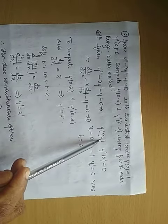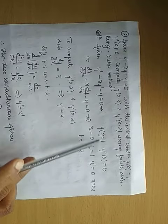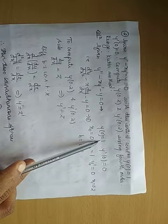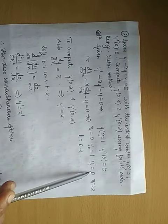y of 0 is 1, y dash of 0 equals 0. So if you see x not is 0, y not is 1, y dash not is equals to 0.